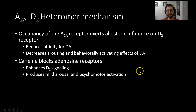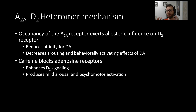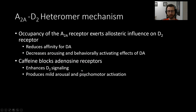What caffeine does is act as an antagonist for these adenosine receptors — it blocks adenosine receptors. With this adenosine brake removed from the D2 receptor, D2 signaling is enhanced. Because D2 signaling is normally inhibited by adenosine signaling, antagonizing adenosine receptors actually enhances dopamine signaling at D2 receptors. This produces mild arousal and psychomotor activation.